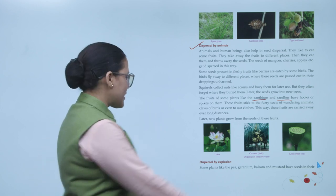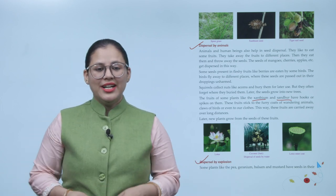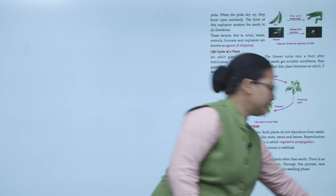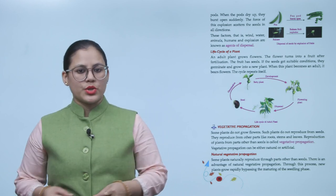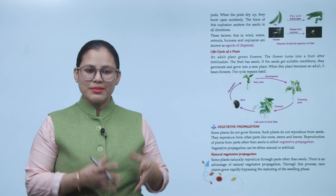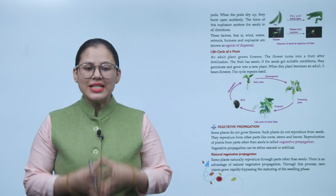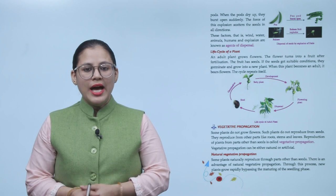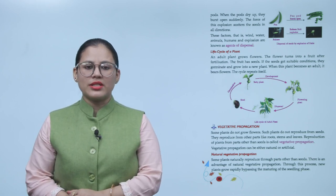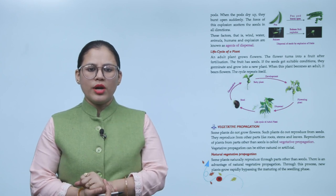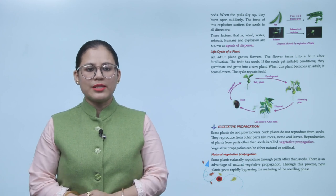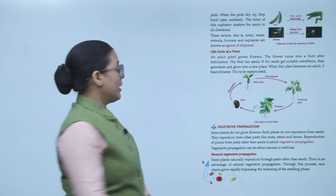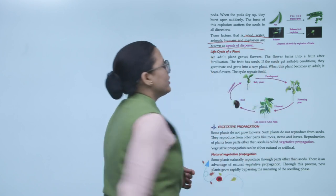Dispersal by explosion. Some plants like the pea, geranium, balsam, and mustard have seeds in their pods. When the pods dry up, they burst open suddenly. The force of this explosion scatters the seeds in all directions. These factors - wind, water, animals, humans, and explosion - are known as agents of dispersal.